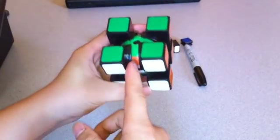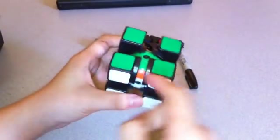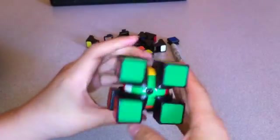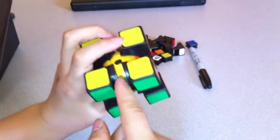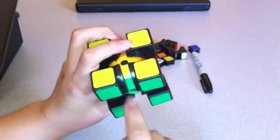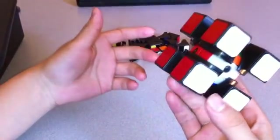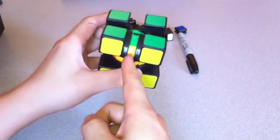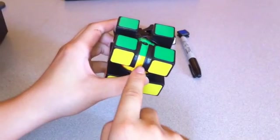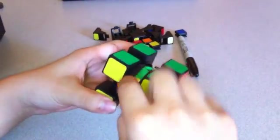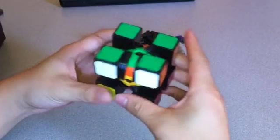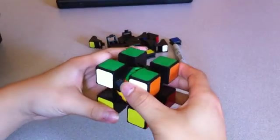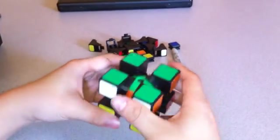And now, the last part to do is to swap these edge pieces with each other so that they line up in the correct order. First you can see that this piece is already solved, and this might not happen. And if it doesn't happen, you can start absolutely anywhere. But in this case, where it does work out so that one of the pieces at least is already solved, you want to start with that piece all the way in the back. This algorithm only involves the top, the right, and the up sides.